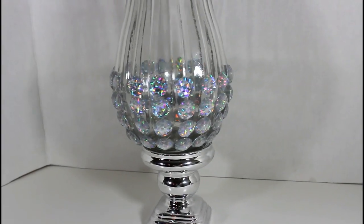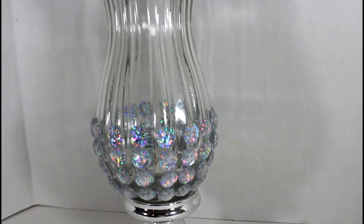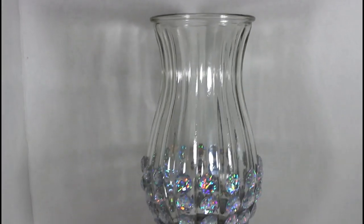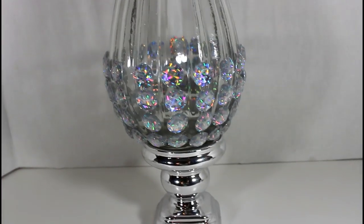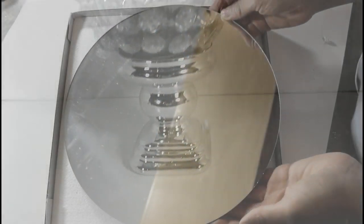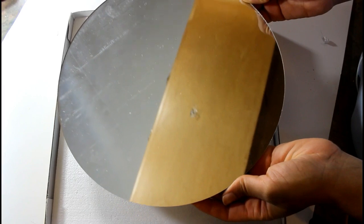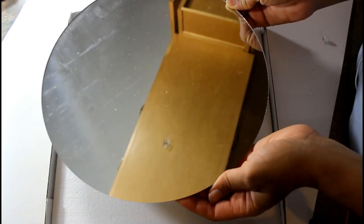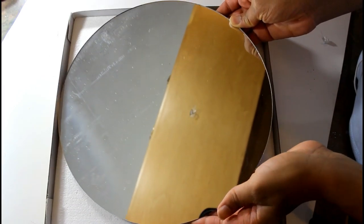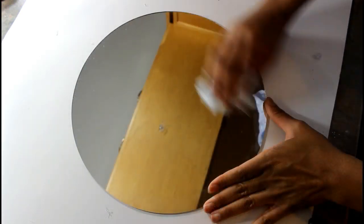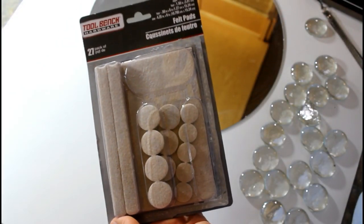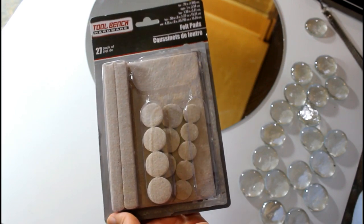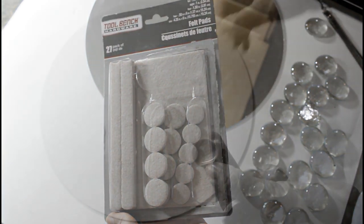Next I'm going to be using this pedestal from the Dollar Tree. Next I'm going to be taking these mirrors that I picked up at my local craft store. I'll be using these felt pads that I picked up from the Dollar Tree and I'm just going to be using these so that I don't scratch up my tables.